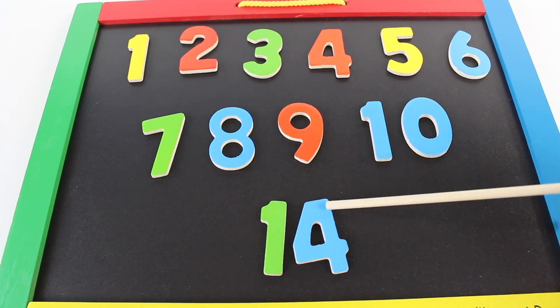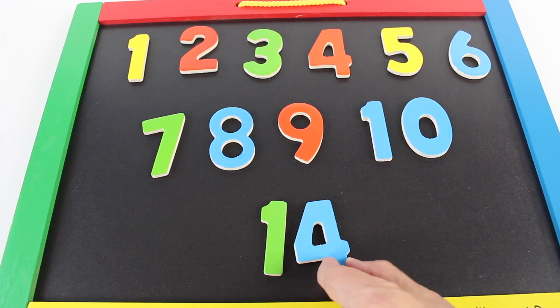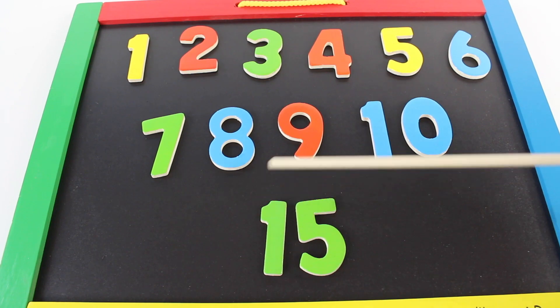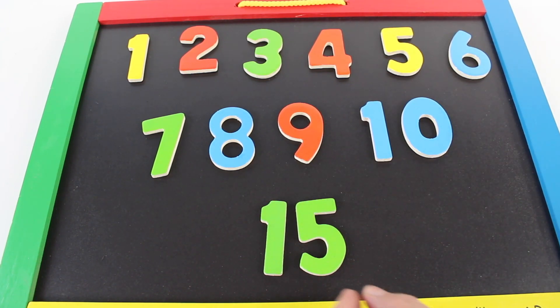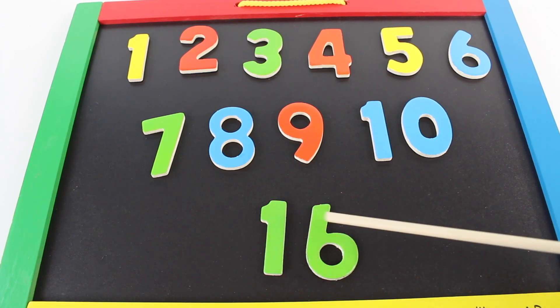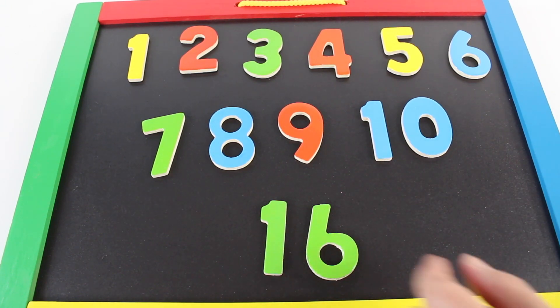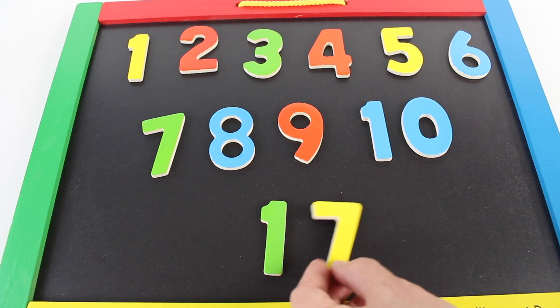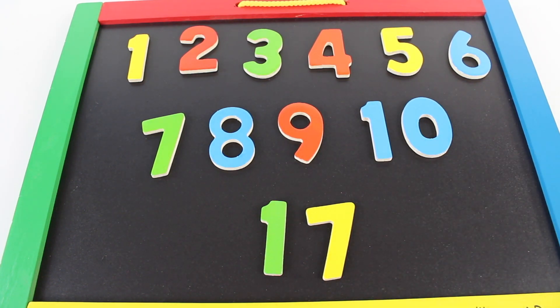One and four make fourteen. One and five make fifteen. One and six make sixteen. One and seven make seventeen.